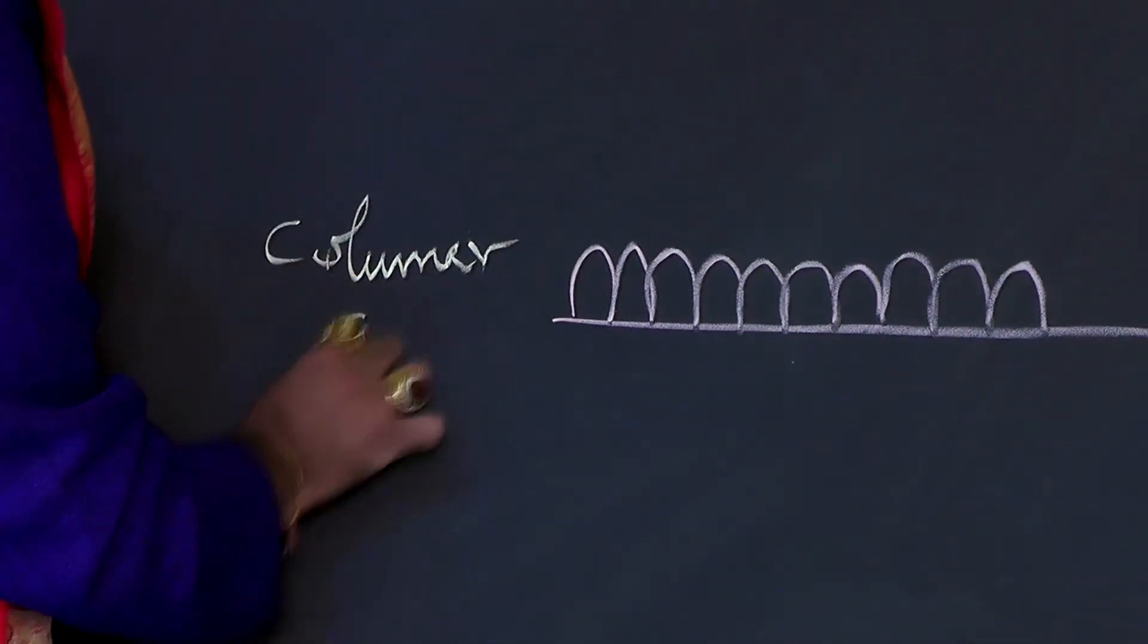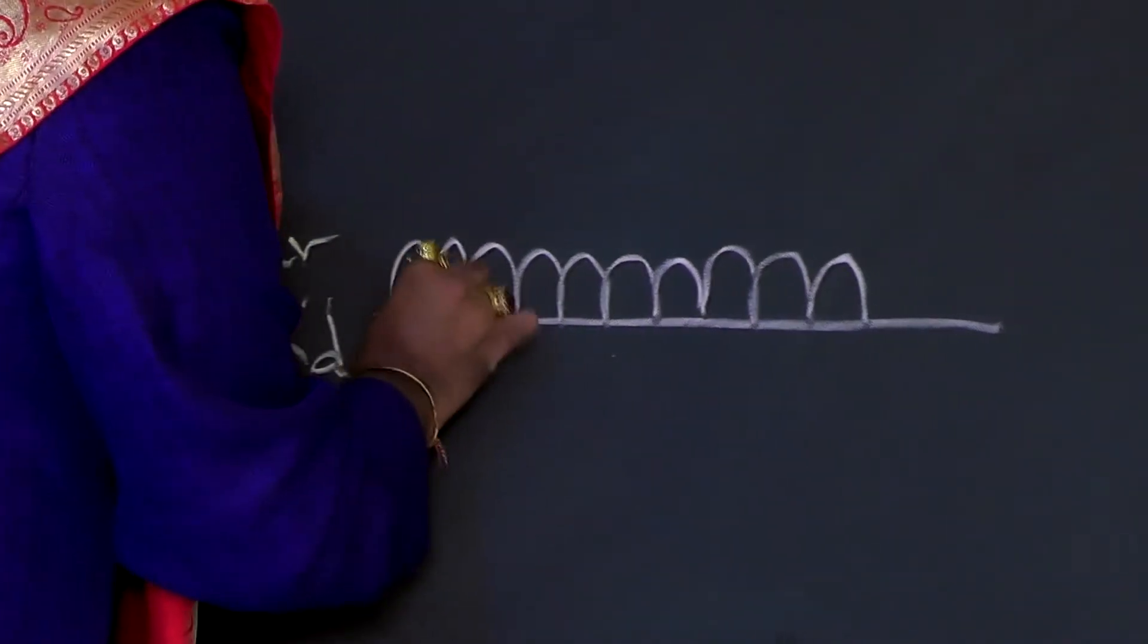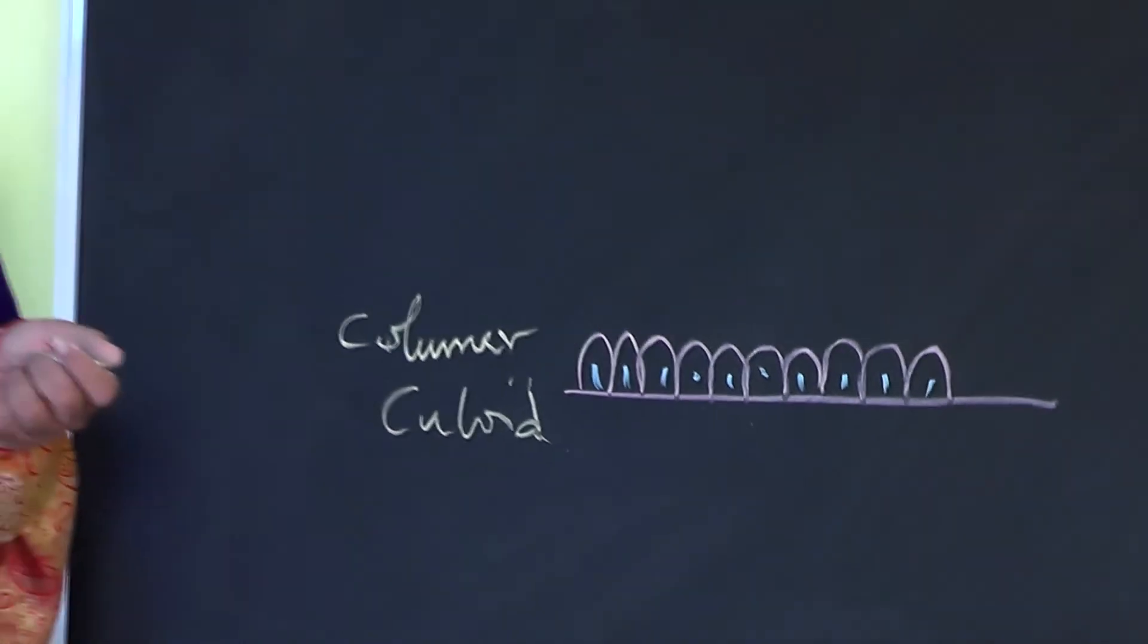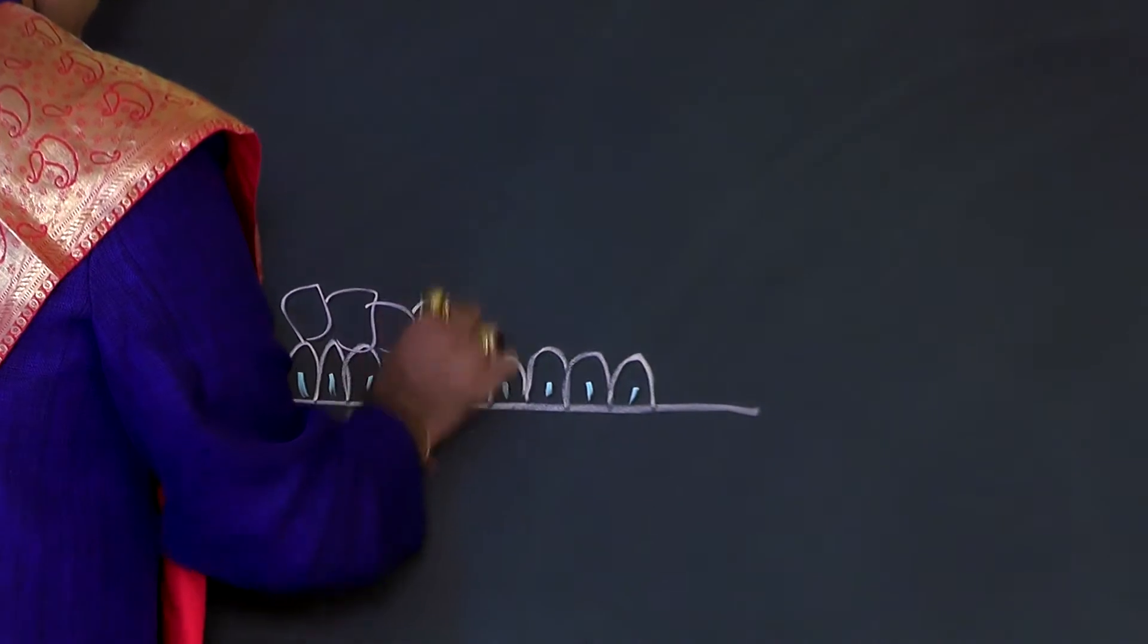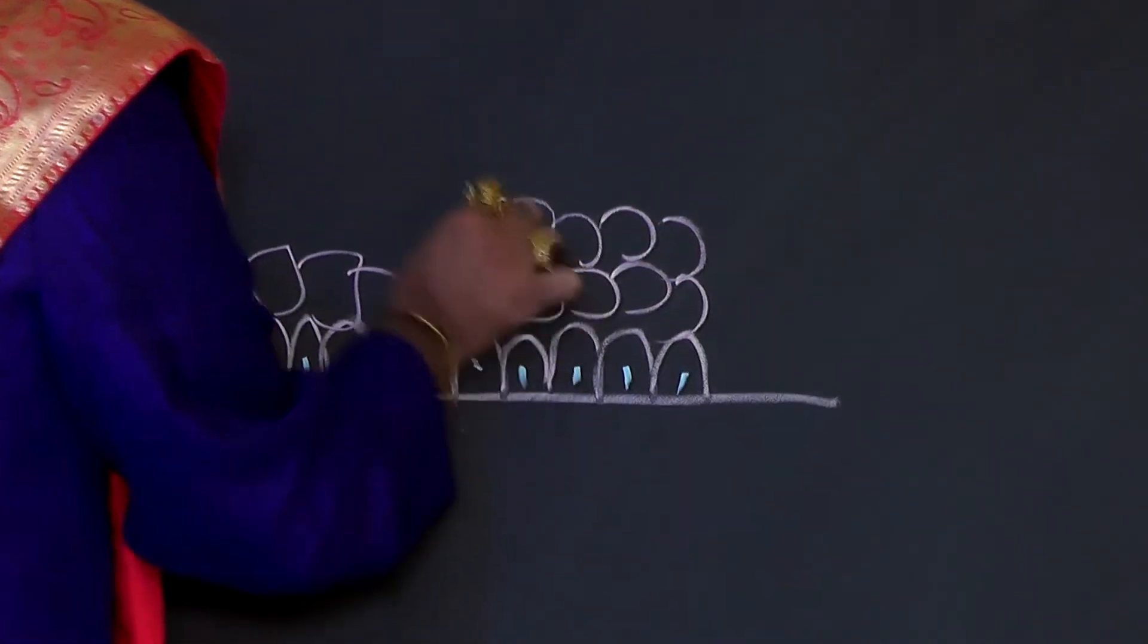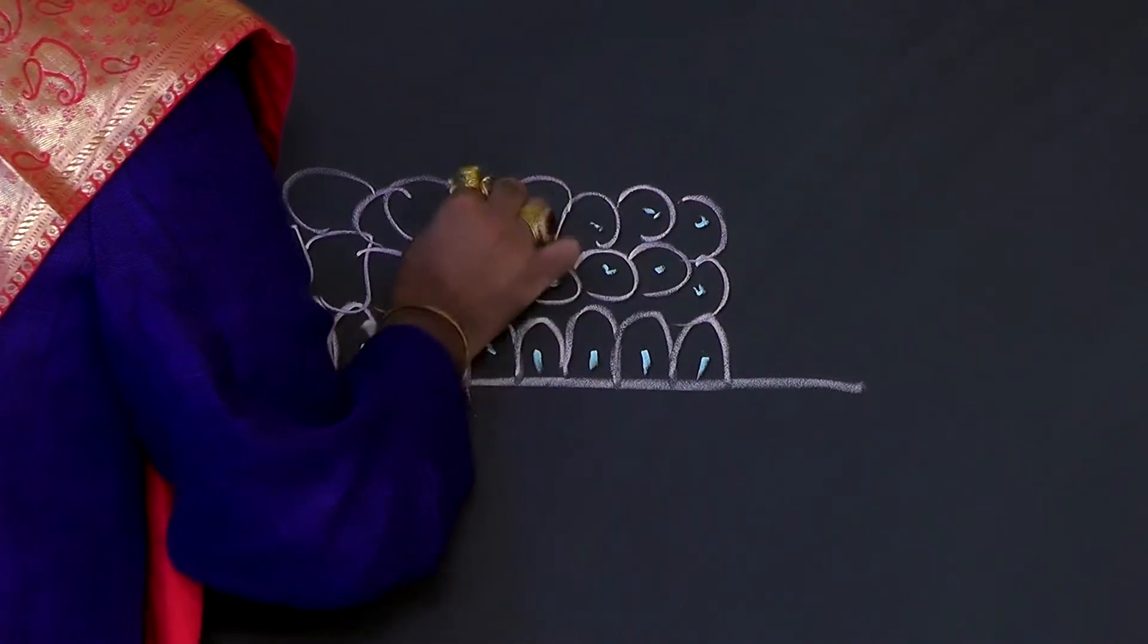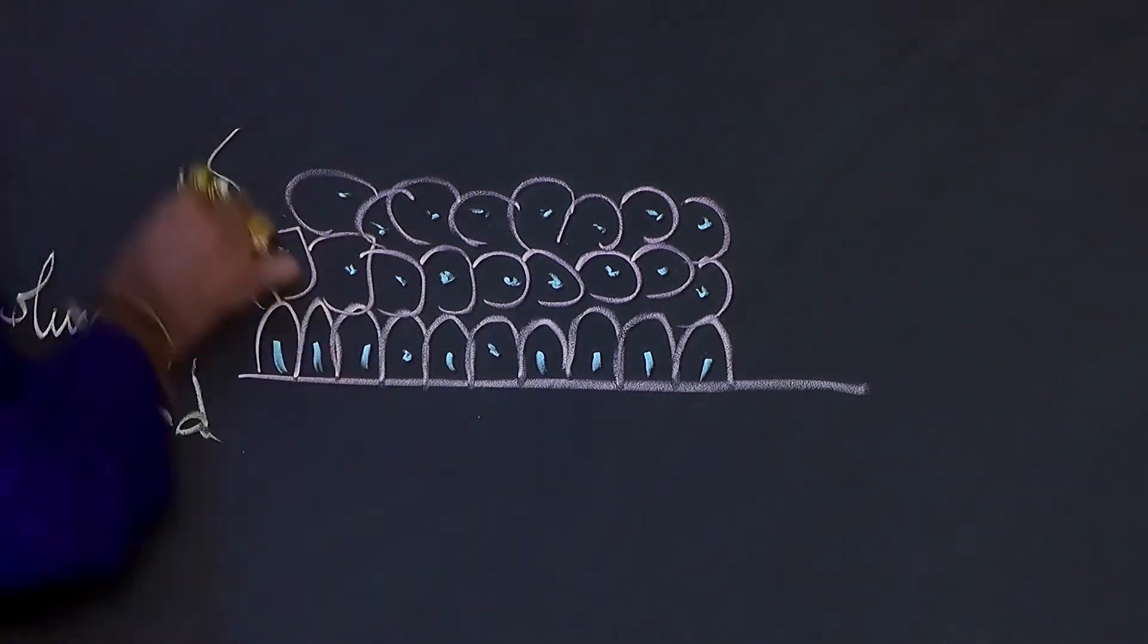These cuboidal or columnar cells are present on the basement membrane. Above them, you have two layers of polyhedral or polygonal cells. What do we mean by polyhedral or polygonal? These cells have many angles with no specific shape.